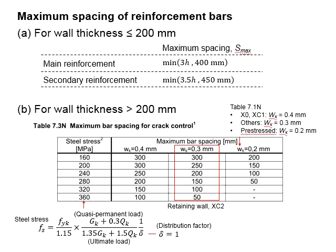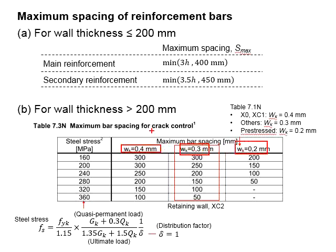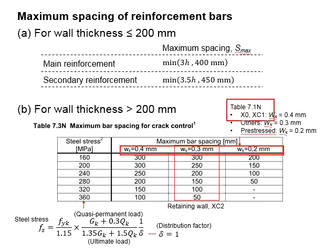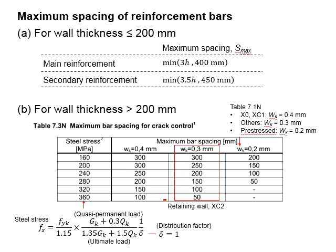For wall thickness greater than 200 mm, Table 7.3N of Eurocode 2 is to be referred to. The table provides a series of stress values in comparison with crack width limits of 0.2, 0.3, and 0.4 mm. The crack width limit is governed by the type of concrete exposure, which can be referred to in Table 7.1N. Retaining walls are always exposed to groundwater, and are therefore normally classified as exposure categories XC2 and XD2, with a crack width limit of 0.3 mm.